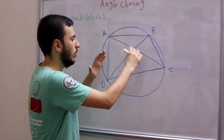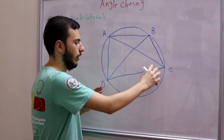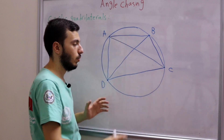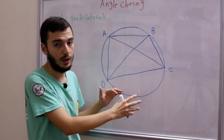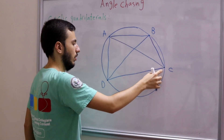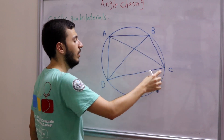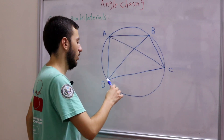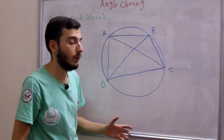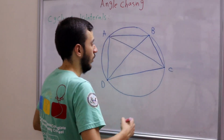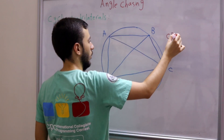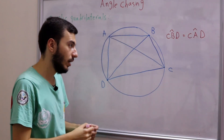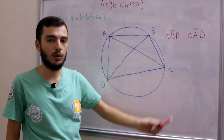More precisely, angles CBD and CAD both face the same arc CD, so they are equal. Similarly for the other pairs. This is again an equivalent statement: if angle CBD equals angle CAD in some quadrilateral ABCD, then ABCD is cyclic; and if ABCD is cyclic, then angle CBD equals angle CAD. So you can use this both to prove cyclicity and to derive angle equalities from a known cyclic quadrilateral.